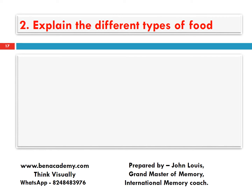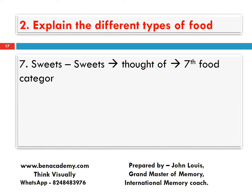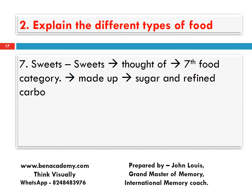How can you remember it now? What are the keywords in it? Sweets can be thought of as the seventh food category. It is made up of sugar and refined carbohydrates. We can easily remember that if we know the keywords. Close your eyes, try to recollect the keywords, and try to connect them — that is more important. If you see them as a picture and try to connect them, you will get the words.